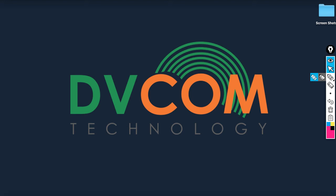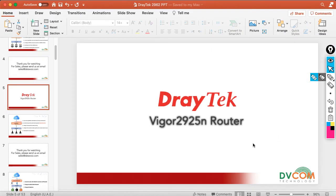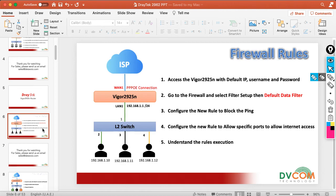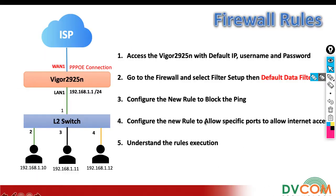Welcome to DVcom Technology. In this lab I am going to show you how to configure firewall rules on a Vigor2925N router. Before we start the configuration, let's understand the lab policy. The Vigor2925N router is acting as a gateway for my internal network, connected with a PPPoA WAN connection, and the LAN is configured with the 192.168.1.1 IP address.